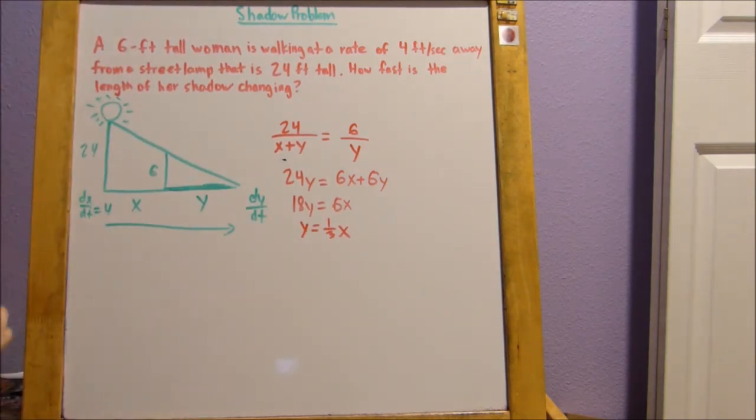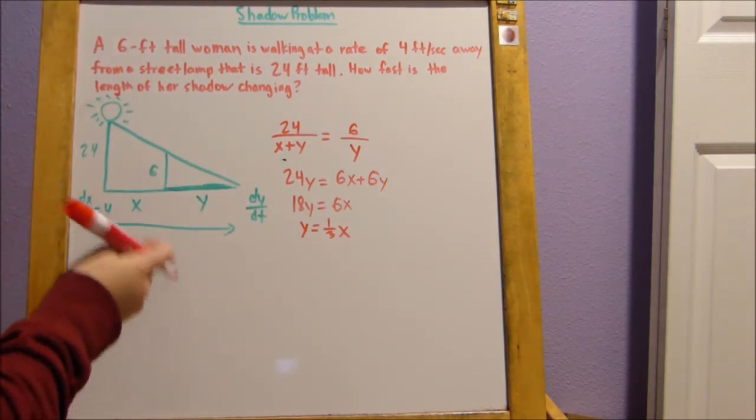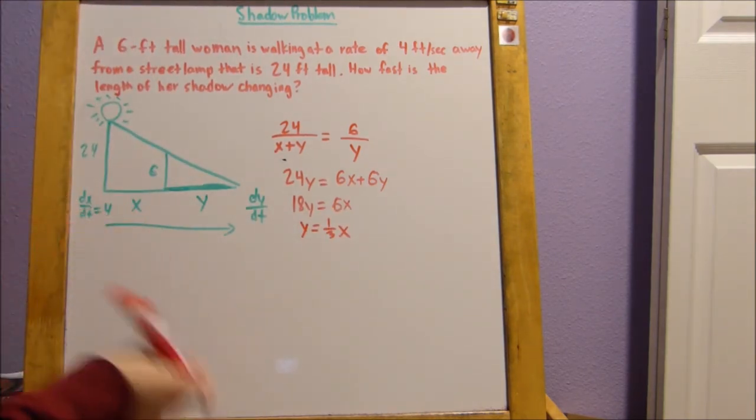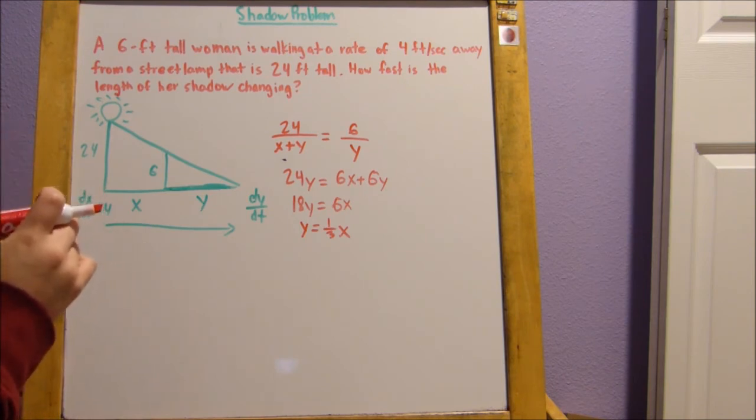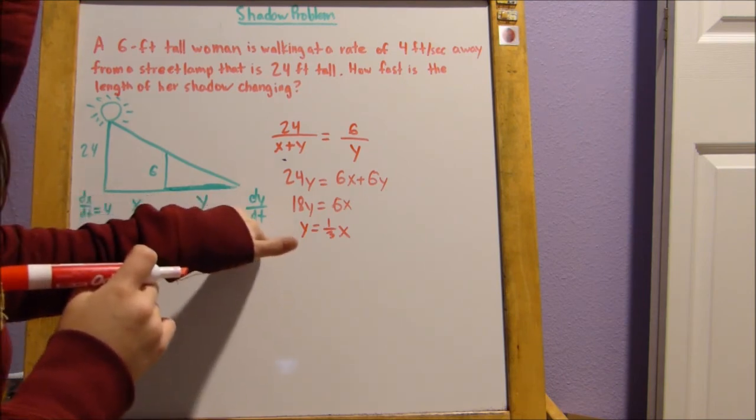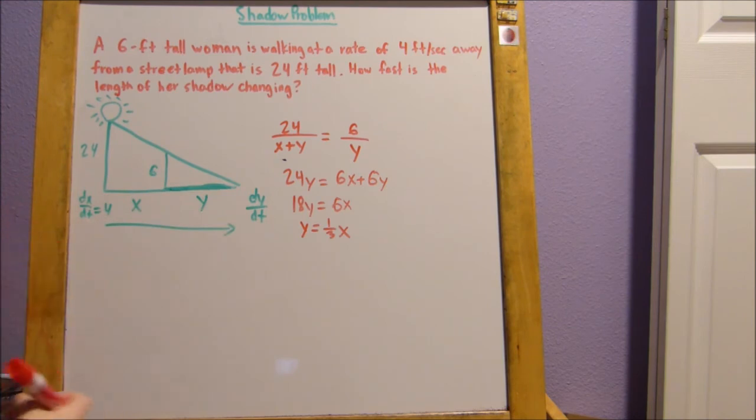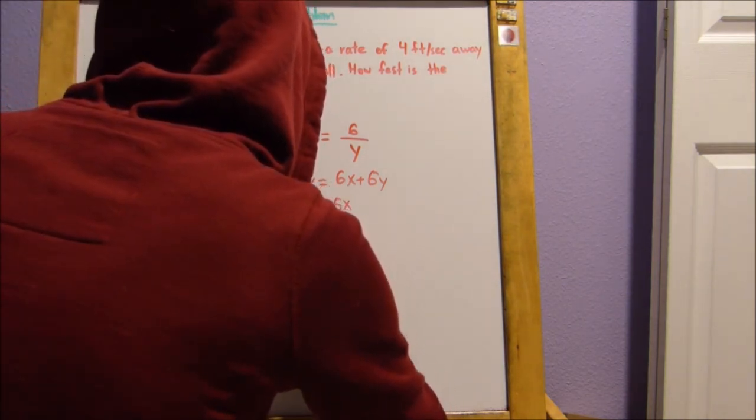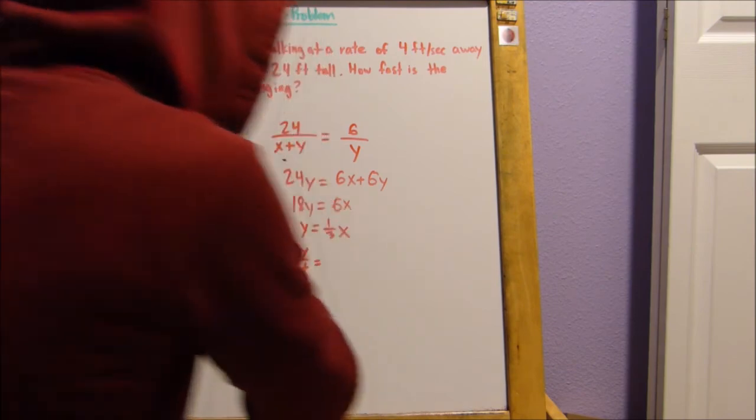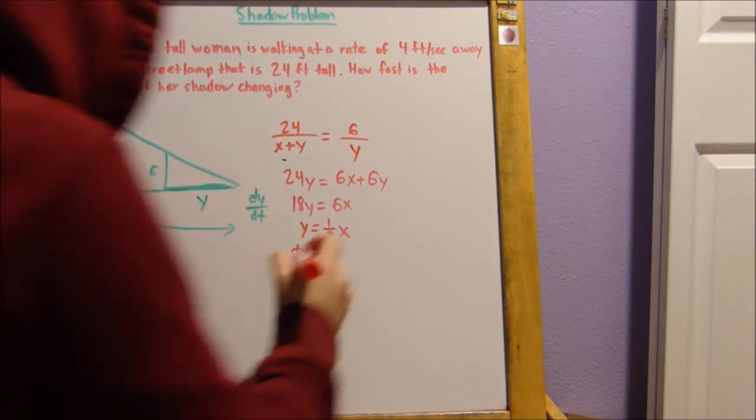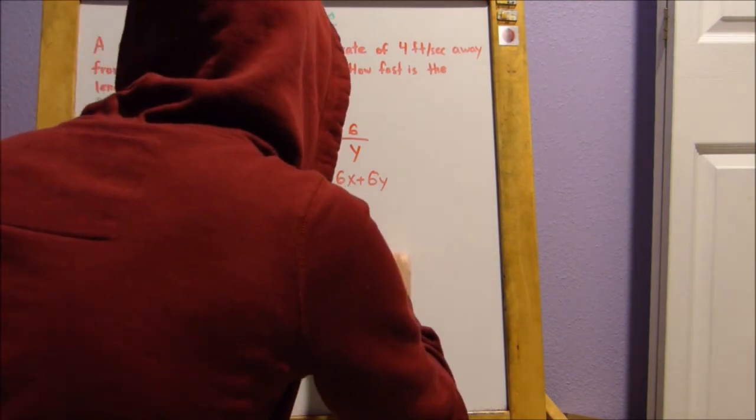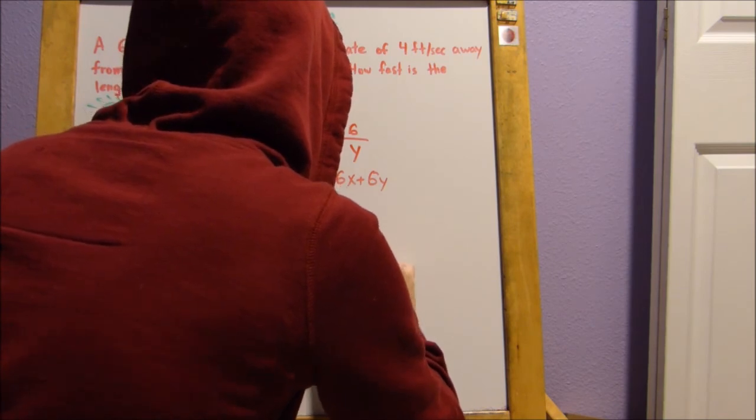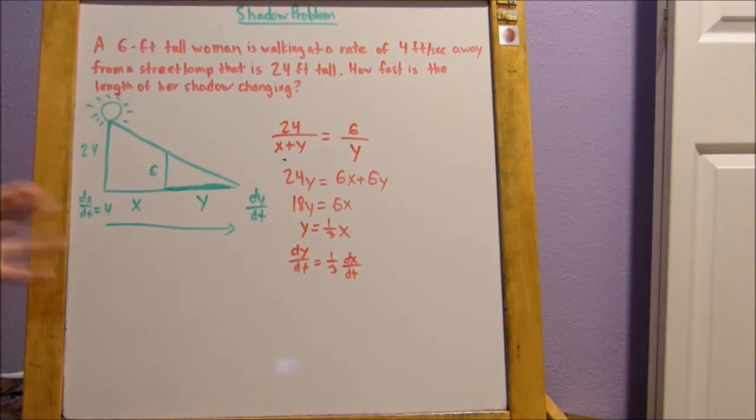Now, since this problem is dealing with rates, otherwise known as derivatives, we're going to take the derivative at this point. There's no real way to solve for dy over dt if you don't take the derivative at this point. So we get dy over dt equals, the derivative of 1 third x is just 1 third, times dx over dt. Everything has to be in relation to t or time.